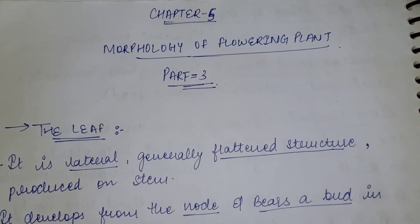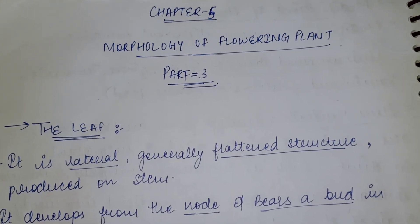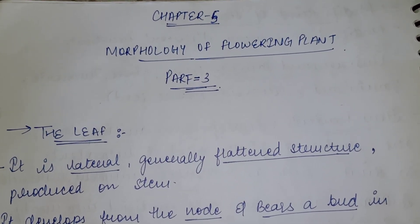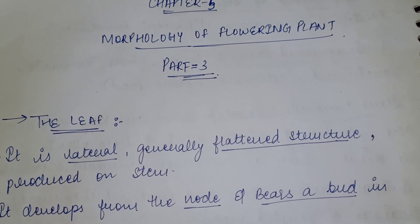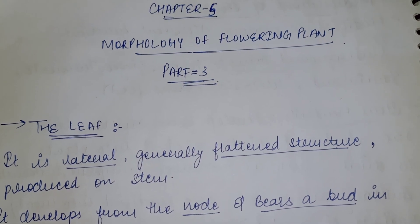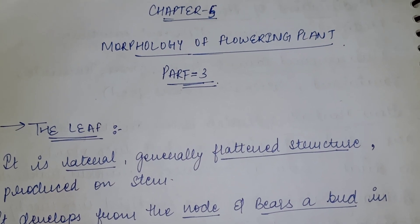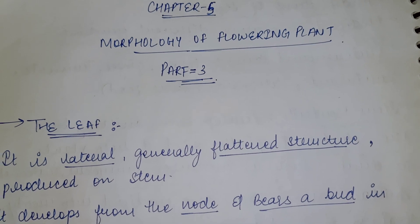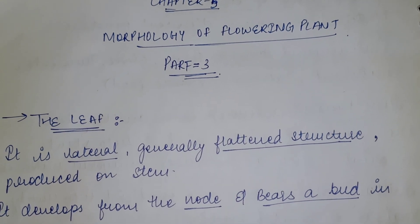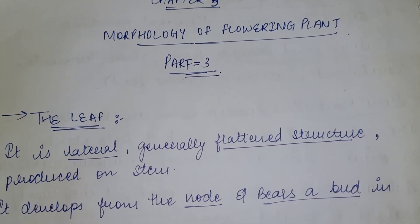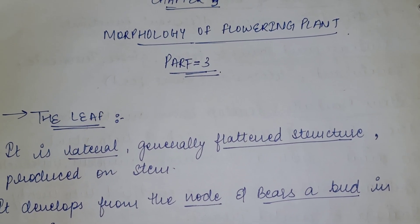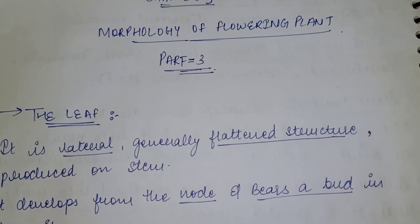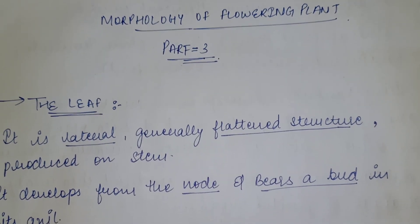Hello, good evening to everyone. Welcome to another video of my YouTube channel United Life Sciences Students. We are looking at Plus One Biology, Chapter Number Five, which is Morphology of Flowering Plants, and today is Part Three for this chapter. In our last video we covered the root and stem, so today we are going to study about the leaf.